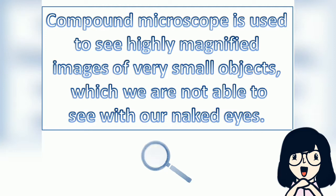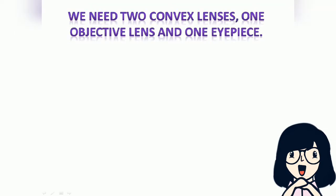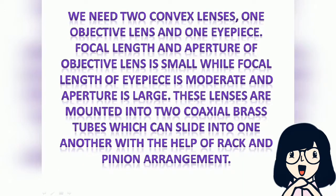A compound microscope is used to see highly magnified images of very small objects which we are not able to see with our naked eyes. We need two convex lenses: one objective lens and one eyepiece. The focal length and aperture of the objective lens is small, while the focal length of the eyepiece is moderate and its aperture is large. These lenses are mounted into two coaxial brass tubes which can slide into one another with the help of a rack and pinion arrangement.